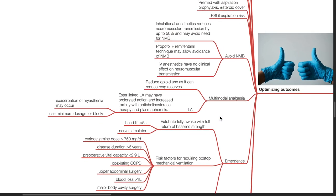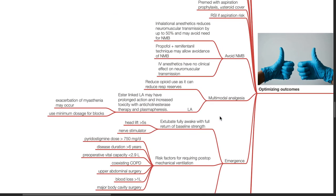Employ multi-modal analgesia. Reduce opioid use as it can reduce respiratory reserves. Ester-linked local anesthetics may have prolonged action and increased toxicity with anticholinesterase therapy and plasmapheresis. Exacerbations of myasthenia may occur. Use minimum dosage for blocks.